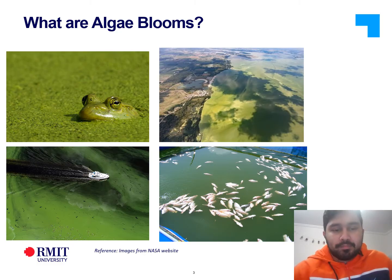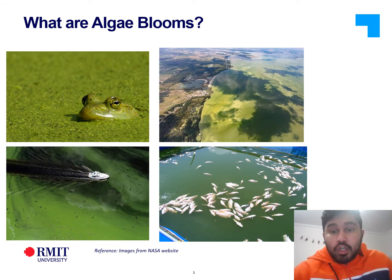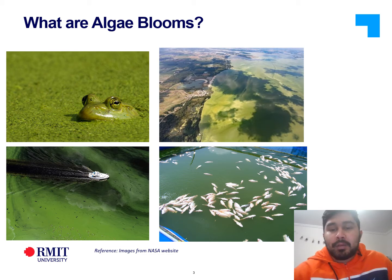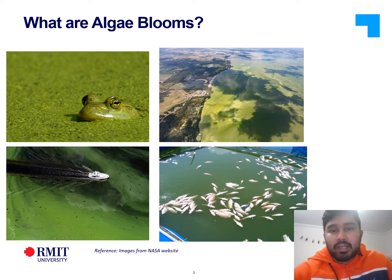So what are algae blooms? Algae are simple plants that live in the sea and freshwater. Harmful algae blooms occur when colonies of algae grow out of control and produce toxic or harmful effects on fish, people, marine mammals and birds. They are the main cause of oxygen depletion, which leads to large-scale death of aquatic creatures. It also makes the drinking water toxic. Studies show that they are a health hazard to humans and the local ecosystem.